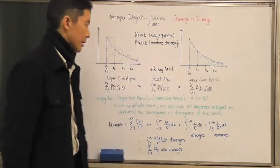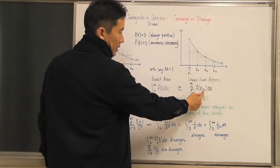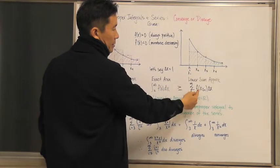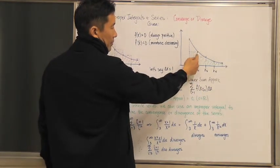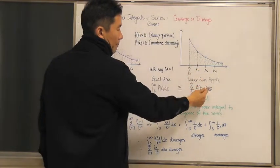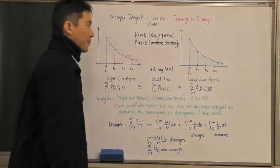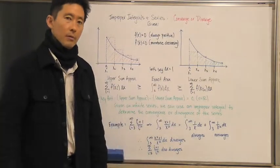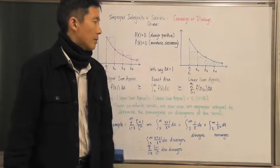The lower sum approximation, on the other hand, is actually going to be f of x sub i plus one. The reason for that is because we start off with x sub two as our first functional value, which gives the height of the rectangle times the width. So we're coming up with rectangles that are all contained below the actual function — that's why we call this the lower sum approximation.